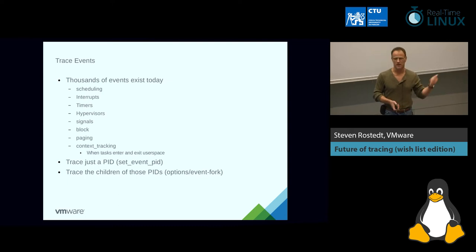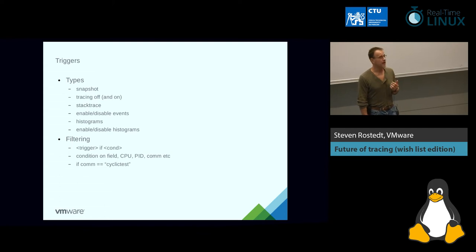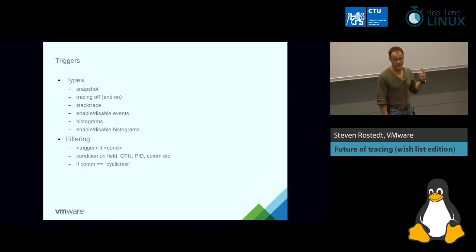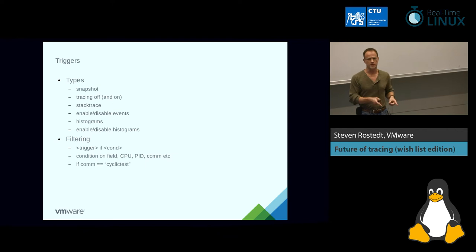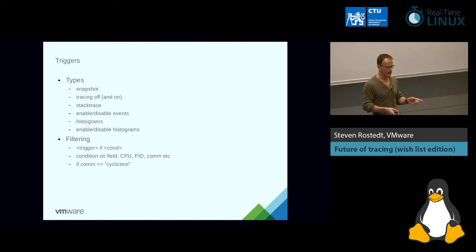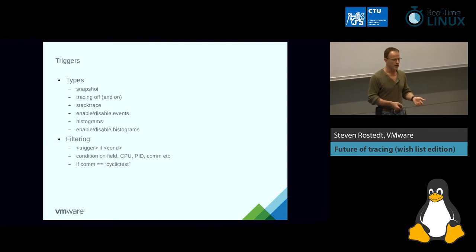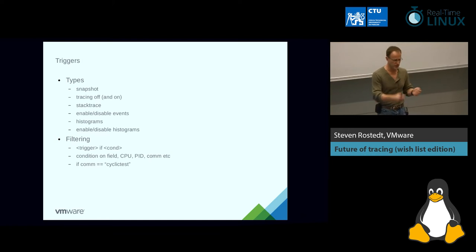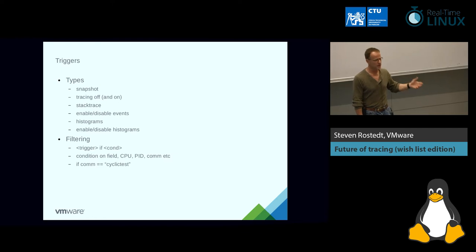Events have triggers as well - the snapshot trigger works the same as I mentioned with function tracing. You can do trace-off and that's for events. If you hit an event you can do various actions. You can enable and disable other events, and there are histograms which I'll talk about a bit later. What's nice about event triggers is you can also put a filter on them - for example, if you want a snapshot only on a certain task when it hits the scheduler, you can put a filter like 'snapshot if comm equals cyclictest', so it only snapshots when cyclictest is the running process.